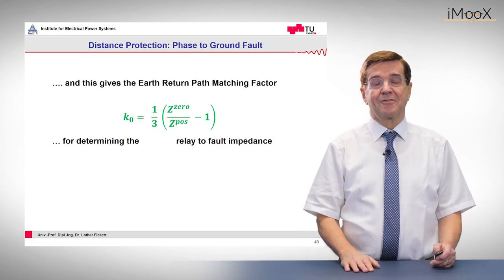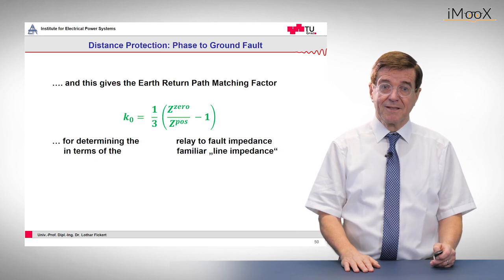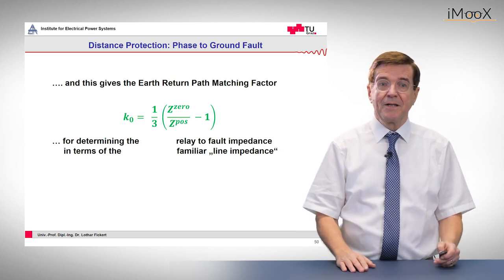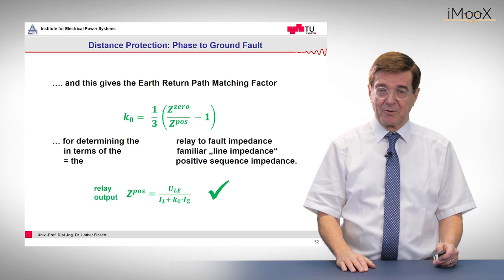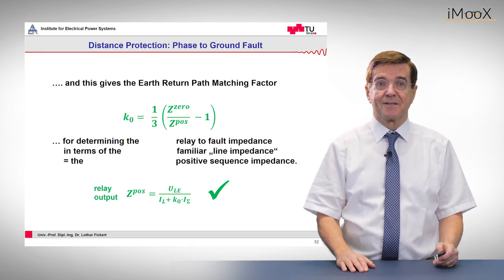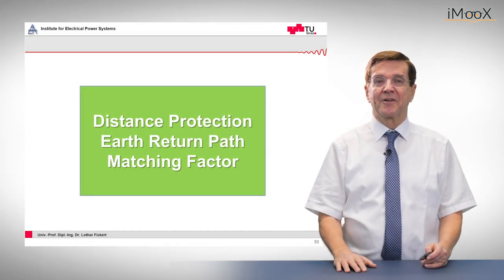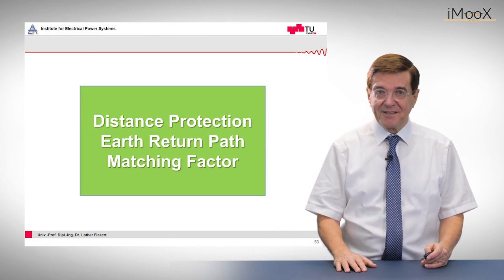Then we can determine from this the relay-to-fault impedance, which is the familiar line impedance. This is used for the relay output, which triggers the relay and determines the protection behavior. So this was today's lecture about distance protection with the focus on the earth return path matching factor. Thank you very much.